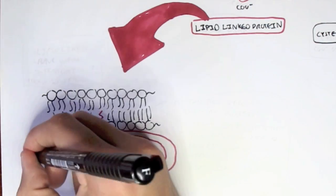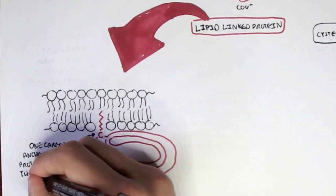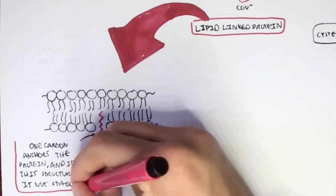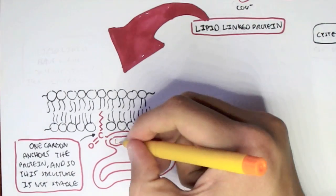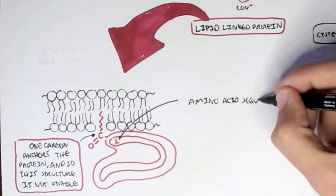Actually the carbon or the sulfur. In this case, a carbon is actually holding the fatty acid. So one carbon anchors the protein. And so this structure makes it actually very unstable because there's only one carbon holding the whole protein.